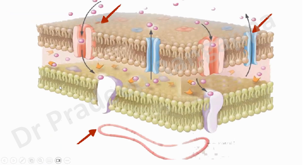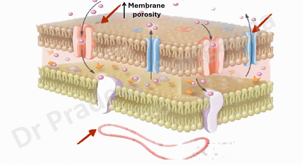If you look at resistance mechanisms, there are porin channels, efflux pumps, plasmid-mediated resistance, and the cell membrane. Resistance is conferred by porin channels becoming ineffective, efflux pumps getting activated and throwing out the drug, and plasmid-mediated resistance.